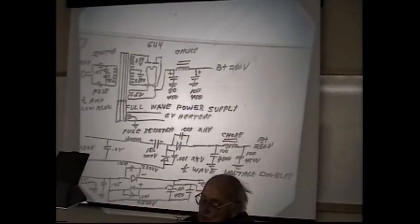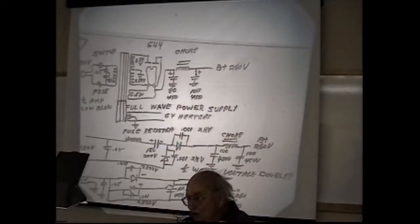Some of the old sets might have selenium rectifiers in there instead of diodes. In which case it would probably be a good idea to change them. Because after 50 years they get pretty weak. And you get a little bit more voltage with the diode. You can increase the value of this fuse resistor if you think the extra voltage is going to be too much. These are usually around 7.5 ohms. But you could put in a 12 ohm or a 15 ohm.